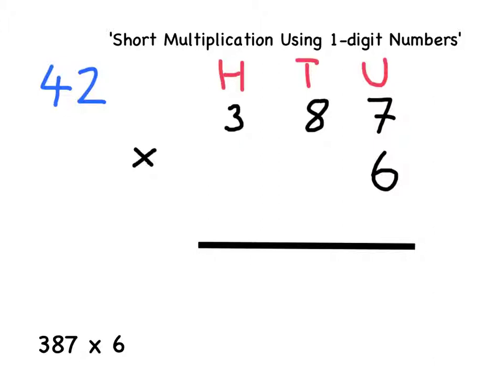Because 42 is a two-digit number with a 2 in the units column and a 4 in the tens column to represent 40, I cannot write this number out in the units column.